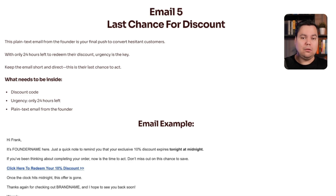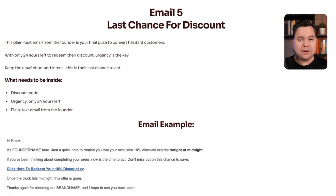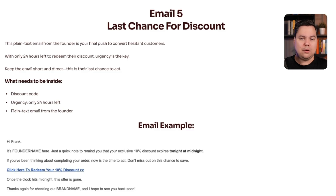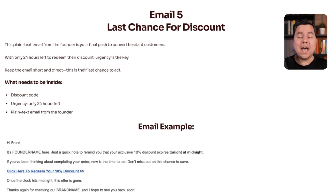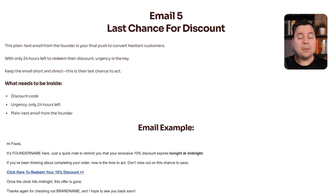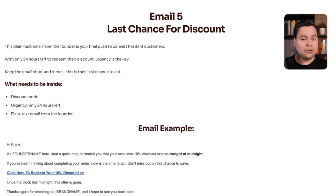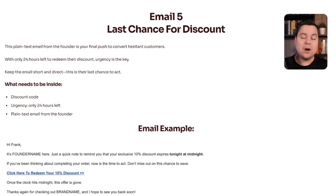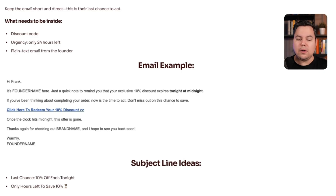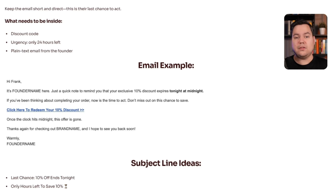Finally, Email 5 is the final reminder — the last email in the sequence. Remind them of the discount code you gave them one day earlier and create strong urgency: tell them the code is only valid for the next 24 hours. I like to make this a plain text email from the founder, because a plain text email is more personal and has better deliverability than a designed email, meaning it's more likely to land in the primary inbox — leading to a higher open rate and more conversions. For example: 'Hi [Name], it's [Founder] here. Just a quick note to remind you that your exclusive 10% discount expires tonight at midnight. If you've been thinking about completing your order, now's the time to act. Click here to redeem your 10% discount. Once the clock hits midnight, the offer is gone.'